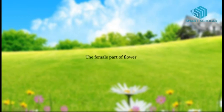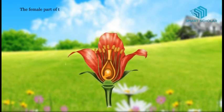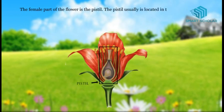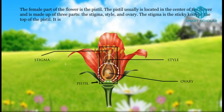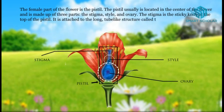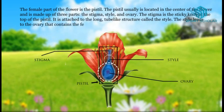The female part of the flower is the pistil. The pistil is usually located in the center of the flower and is made up of three parts: the stigma, style, and ovary. The stigma is the sticky knob at the top of the pistil. It is attached to the long tube-like structure called the style. The style leads to the ovary, which contains the female egg cells called ovules.